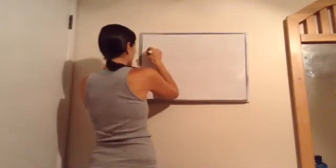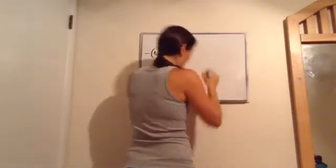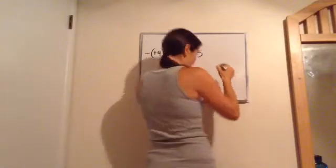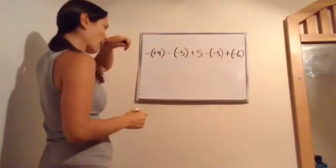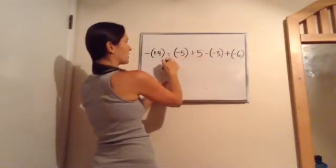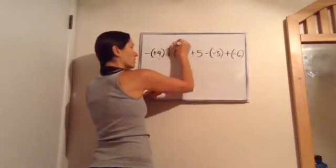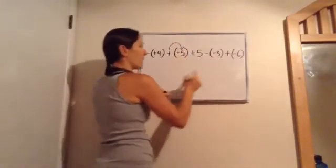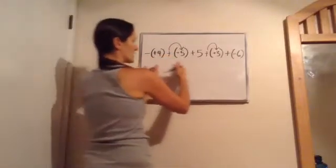This next one is a little bit tougher. It's got positive 4 in parentheses, minus negative 5, plus 5, minus a negative 3, plus a negative 6. Now remember: you see this minus and this minus — these are just the minuses, not the negatives. I'm going to change them to plus, and change the sign of that. Negative 5 becomes positive 5. Negative 3 becomes positive 3.